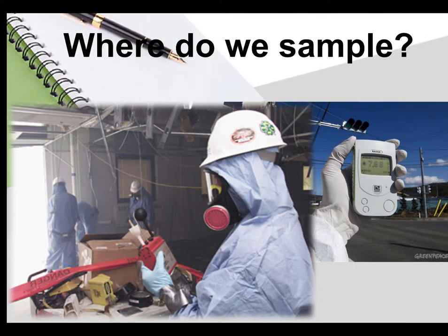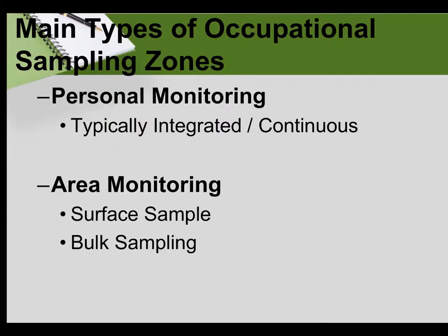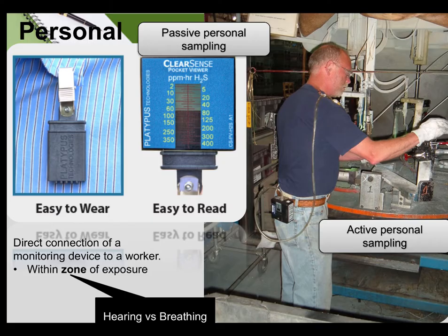Let's start with two broad categories of sampling, which are used to answer the question of where do we sample. We have two main zones: we sample in our personal zone — whether that's our breathing zone or a hearing zone — which is typically integrated and/or continuous monitoring. There's also area monitoring that takes place, including surface sampling or bulk sampling. So our two main zones are personal and area.